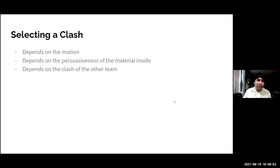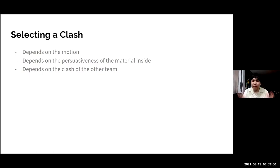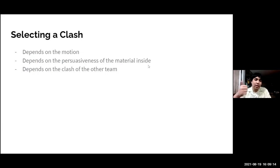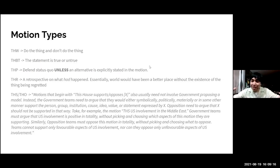Now the more debatey part: how do you select a clash? There are three broad things to consider. The first depends on the motion type, the second depends on the persuasiveness of the material inside, and the third depends on the clash of the other team. The clash you can select depends on the motion type because motion types impose constraints on the way you can dispute or support the motion.